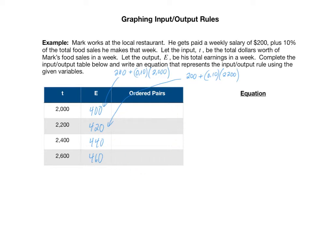Notice with this input-output table that I included a column for ordered pairs. I want to write down these ordered pairs. Now notice I didn't say whether it was (t, e) or (e, t). Which one would it be? Well, the input is t and the output is e. Our ordered pairs are always the form input comma output. So that means it's got to be (t, e) in that order. So for the first one we've got (2000, 400). The next one is (2200, 420). The next one is (2400, 440), and the next one is (2600, 460).